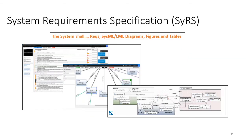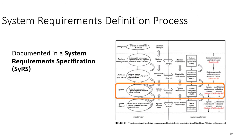System requirements are typically English language descriptions of the system 'shall' statements, and it's possible to support those with LML, SysML diagrams, and any figures or tables deemed necessary. The System Requirements Specification is the third specification in the hierarchy: starting with the Business Requirements Specification, used as input to the Stakeholder Requirements Specification, which then yields the System Requirements Specification developed via this process.